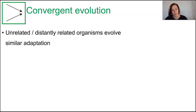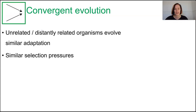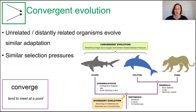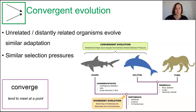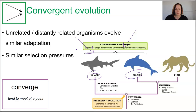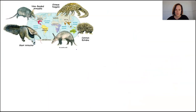Convergent evolution occurs when natural selection acts on unrelated or distantly related groups of organisms from different ancestral lineages, causing them to evolve similar adaptations due to being exposed to similar selection pressures. This is where we start to see analogous structures — similarity in form due to function. For example, aquatic animals like sharks and dolphins have similar streamlined body shapes, and even penguins show similar body shapes because they swim, even though none of these are closely related.